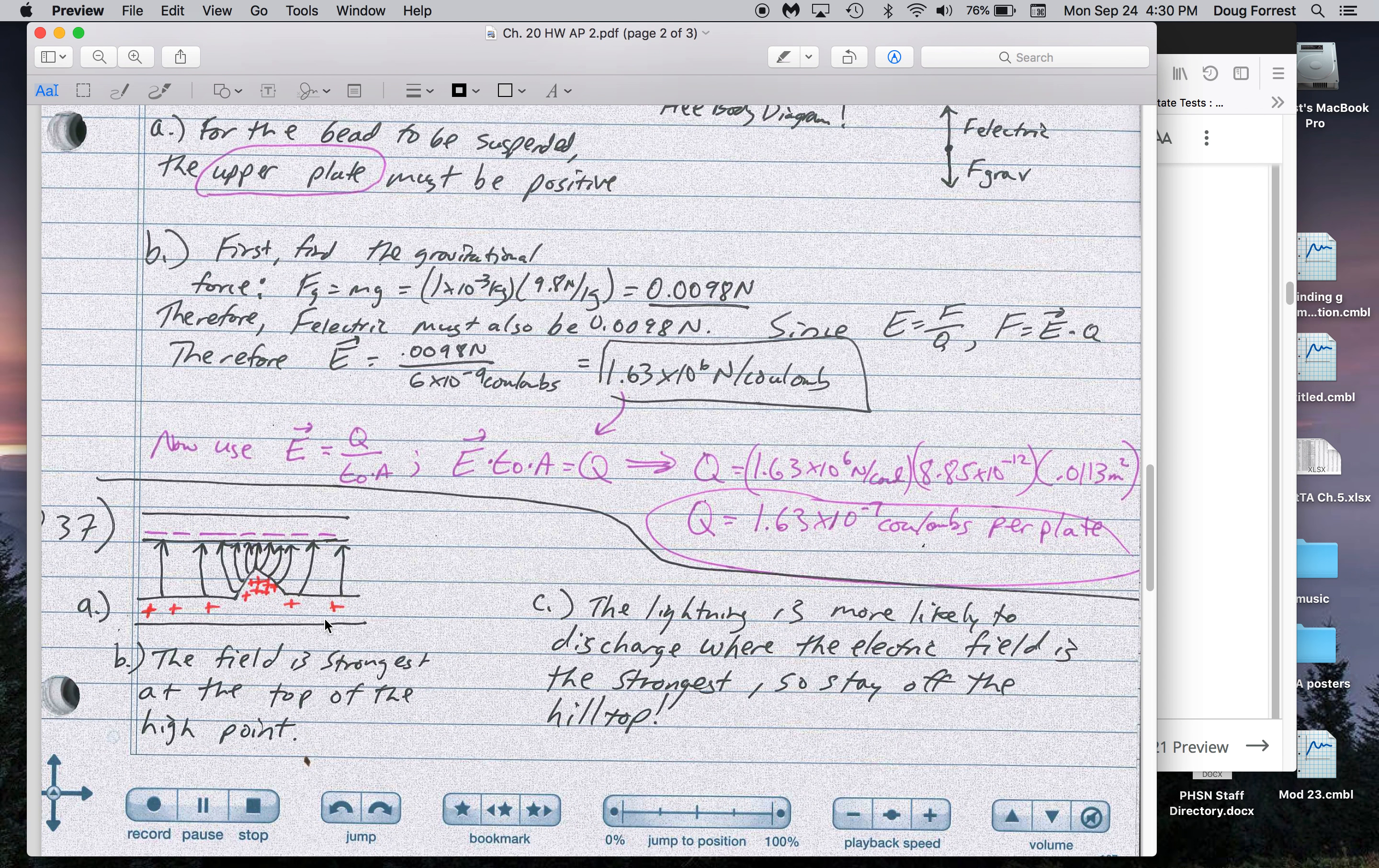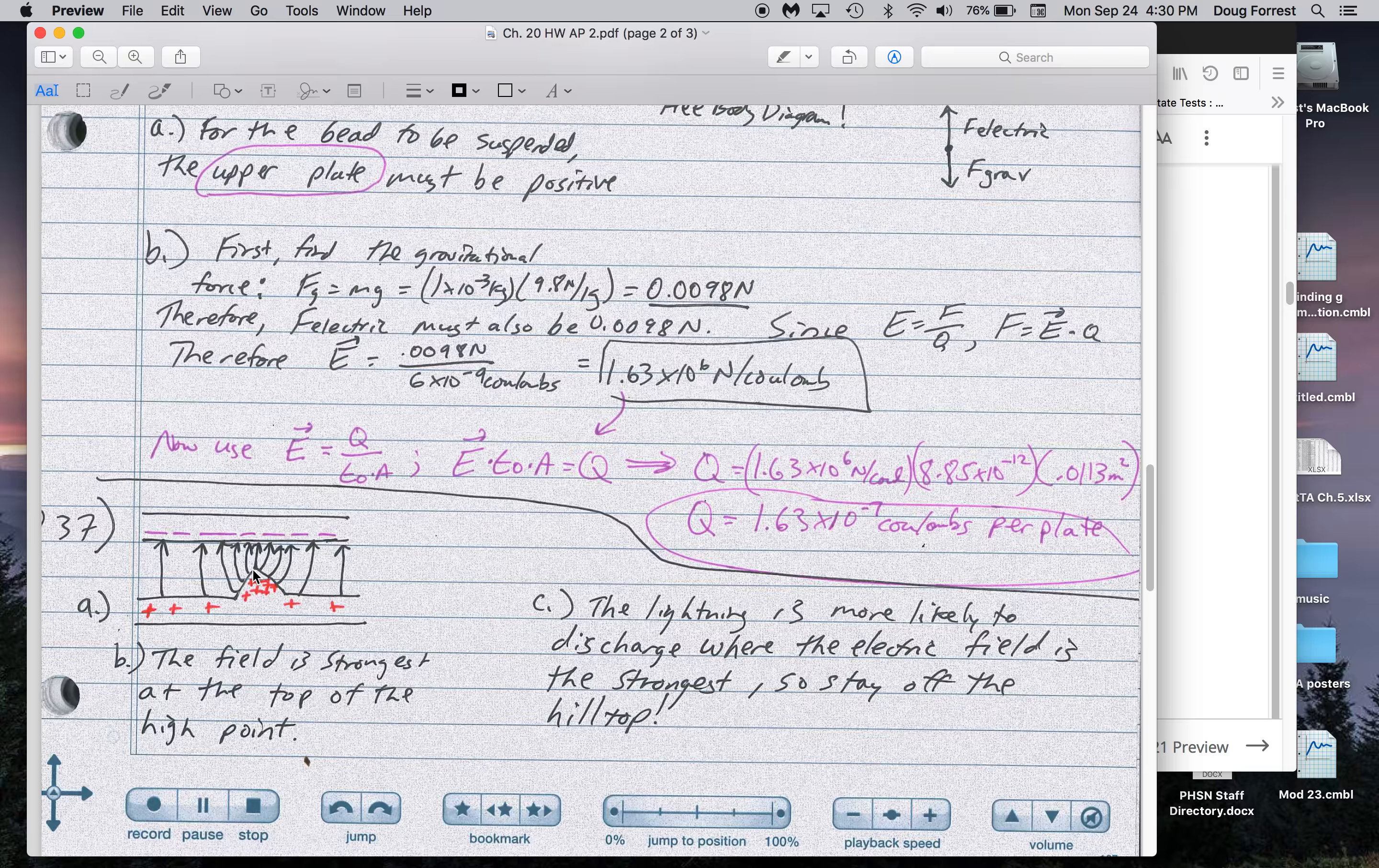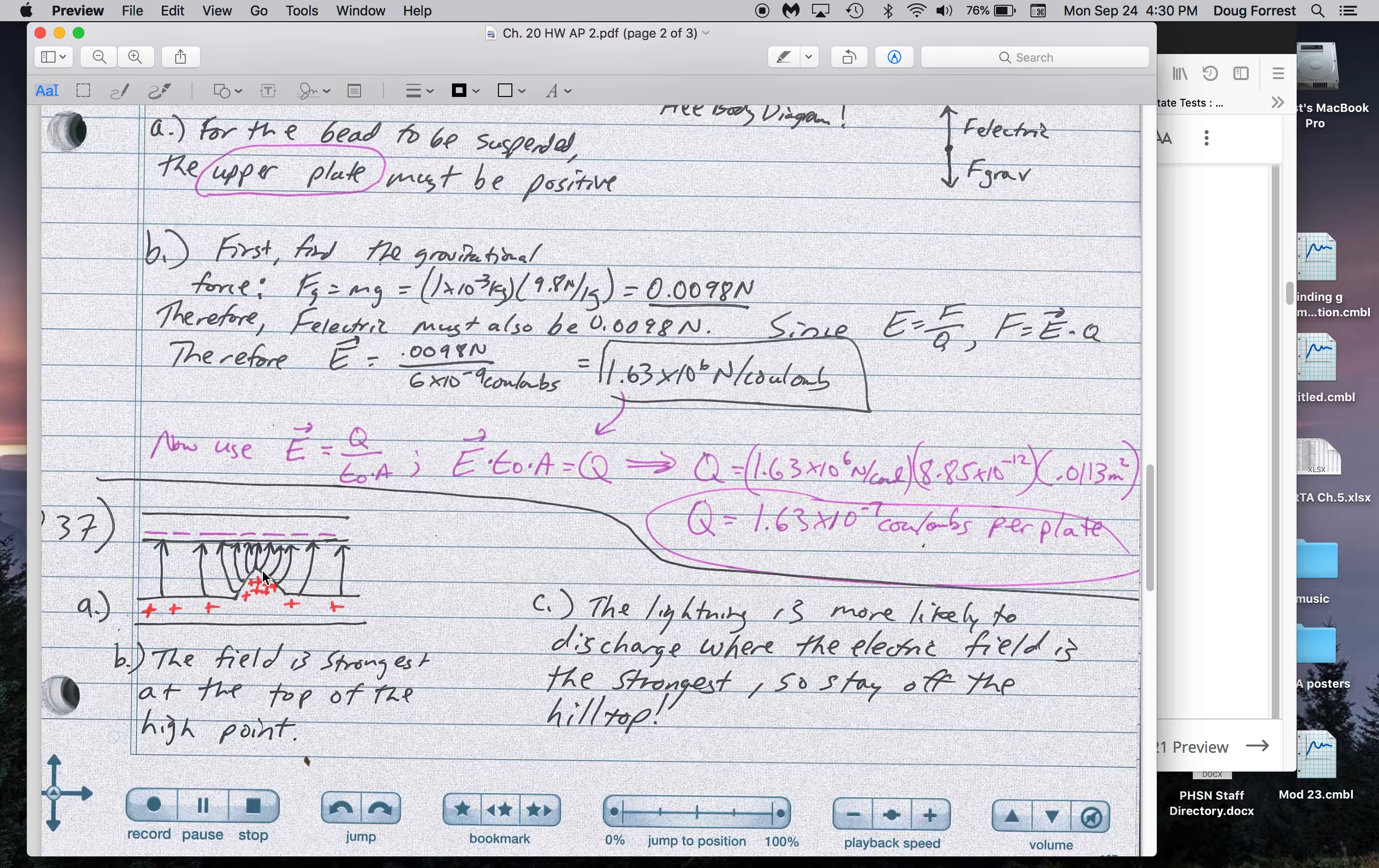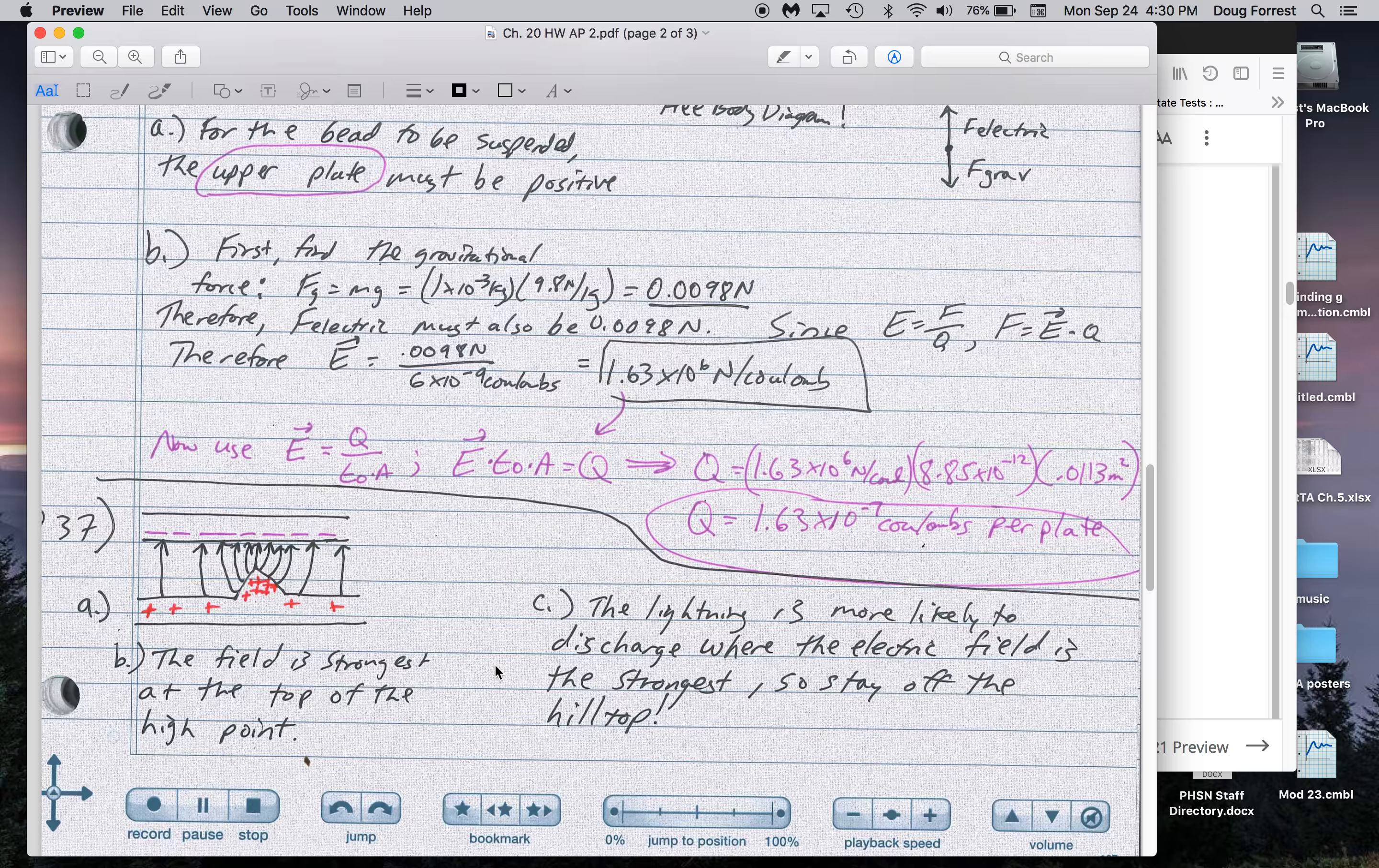For number 37, this is a picture. Here's the ground. The charge is built up on the high points because they're attracted to the negatives. The electric field strength is strongest here, so lightning is most likely to strike there. Stay off the hilltop.